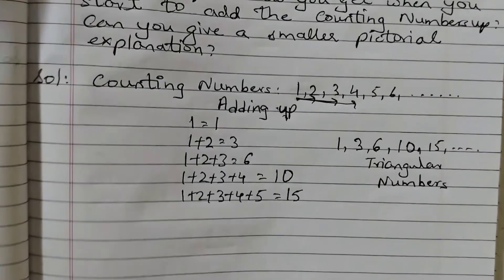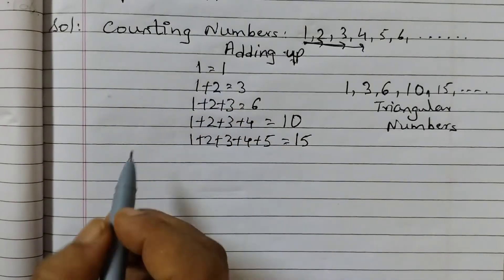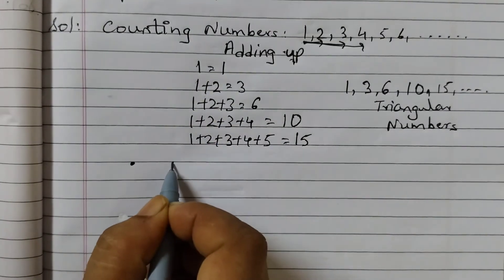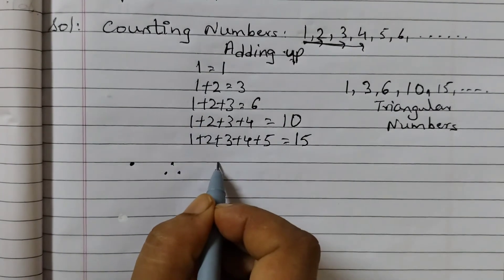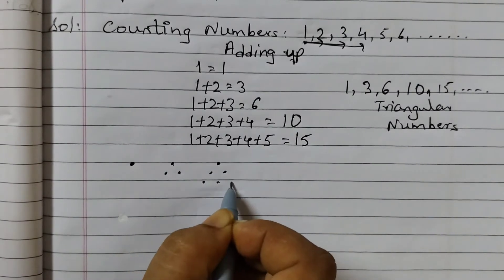First is 1, so just 1 dot. 1 plus 2, so 1 plus 2 plus 3, so 1, 2 dots and then 3 dots.